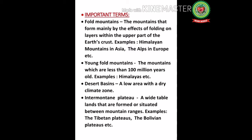Before we start, let's recall the important terms of the chapter. First, fold mountains: mountains that form mainly by the effects of folding on the layers within the upper part of the earth's crust — example, the Himalayan mountains in Asia, the Alps in Europe. Young fold mountains are mountains which are less than 100 million years old, examples include the Himalayas. Desert basin: a low area with a dry climate zone. Inter-mountain plateau: wide tablelands formed or situated between mountain ranges, examples include the Tibetan plateau and the Bolivian plateau.